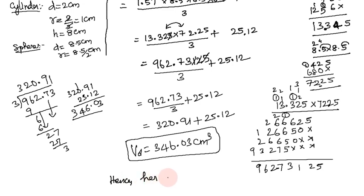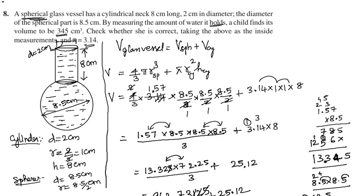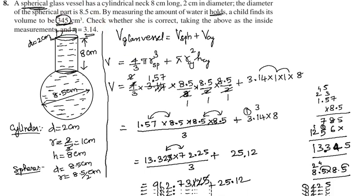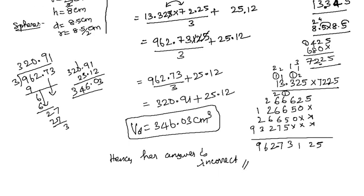Therefore, the child's answer is incorrect. The correct volume is approximately 346.03 cm³, not 345 cm³ as the child claimed. So the answer of 345 cm³ is not correct.